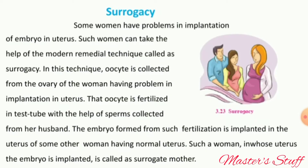Some women's uteruses cannot carry out embryo implantation — they face problems during the implantation process. To help such women, there is a modern remedial technique called surrogacy.